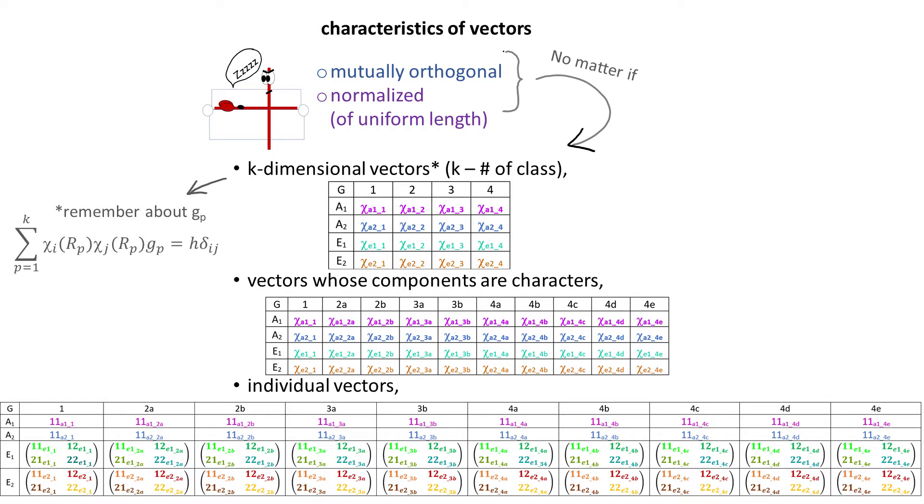gp is the number of operations in the pth class. The second characteristic is that the vectors that make EREPs are also normalized. What it means is that they have a uniform length. Please recall that the dot product is equal to the square of length. So when we take a dot product of each of these vectors with themselves, it will give us some constant value.